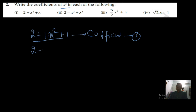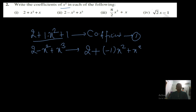The second question is 2 minus x² plus x³. Here you can rewrite it as 2 plus (minus 1) into x² plus x³. So the coefficient of x² is minus 1. That is, the coefficient of x² is how much? Minus one. Whatever is associated with x² — here it is 1, so the coefficient is minus 1.